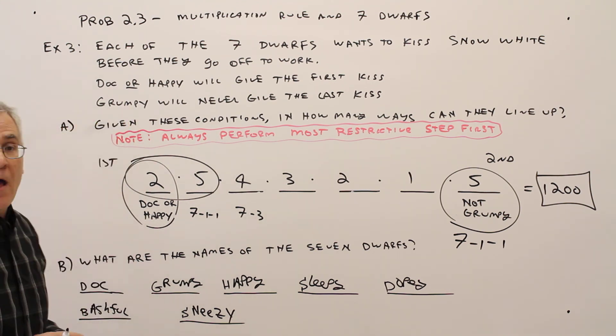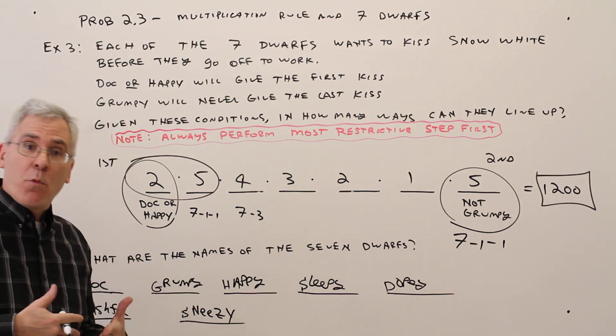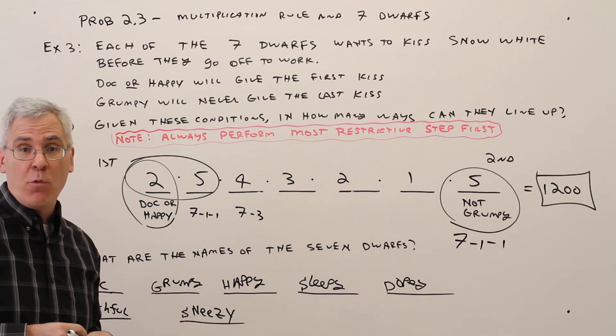So there you have it, how to use the multiplication rule with a problem involving Snow White and the seven dwarves.